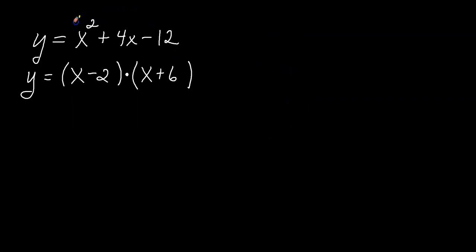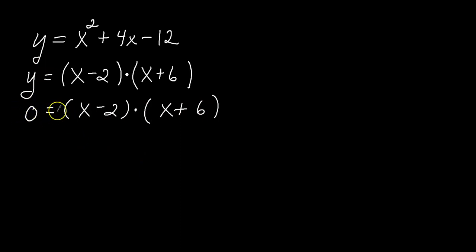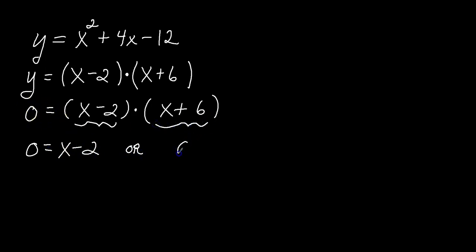Now I want to find the x-intercepts of the graph. Hopefully you remember the x-intercepts — where the graph crosses the x-axis — occur when y equals 0. So I'll replace y with 0. Then I'll use the zero product property: set 0 equal to each factor. So I set 0 equal to x minus 2, and also 0 equal to x plus 6.